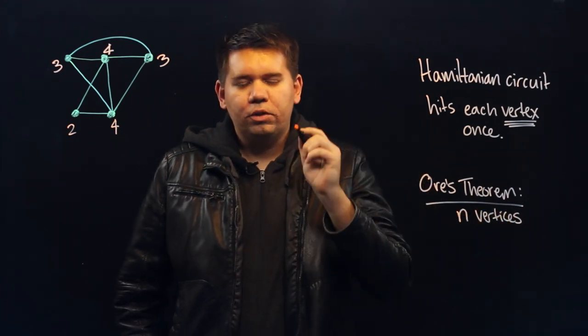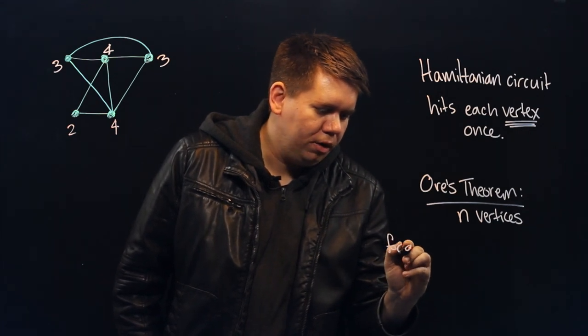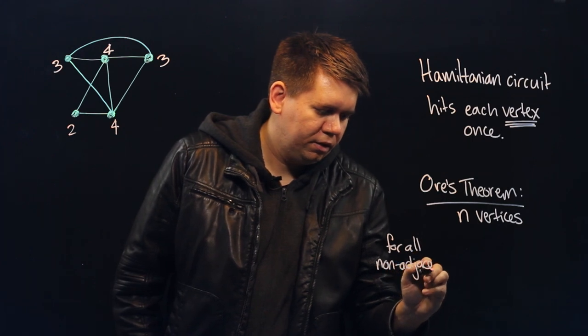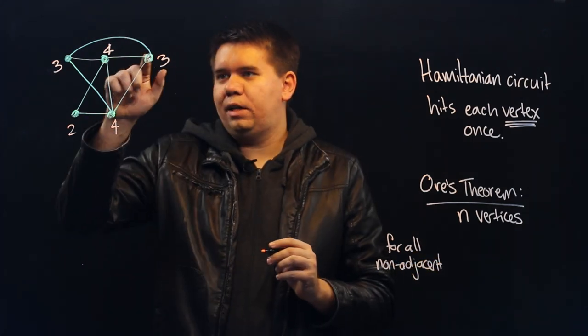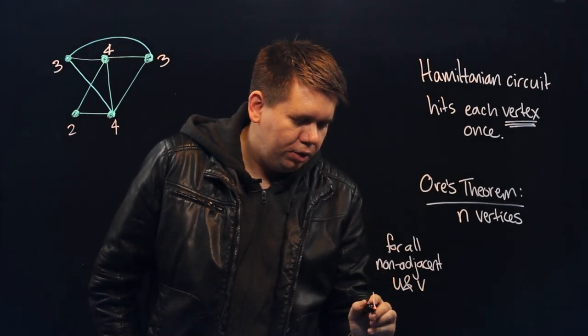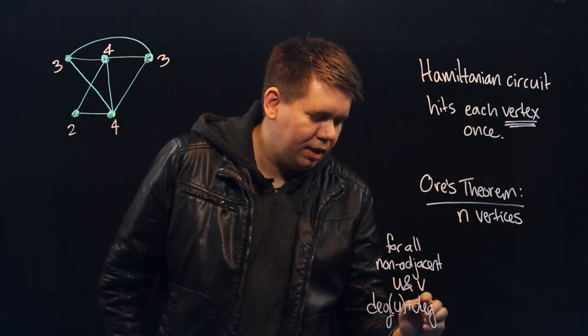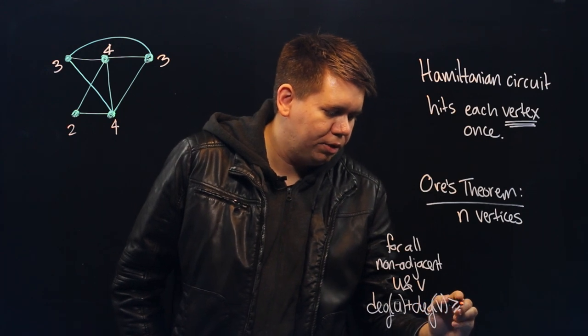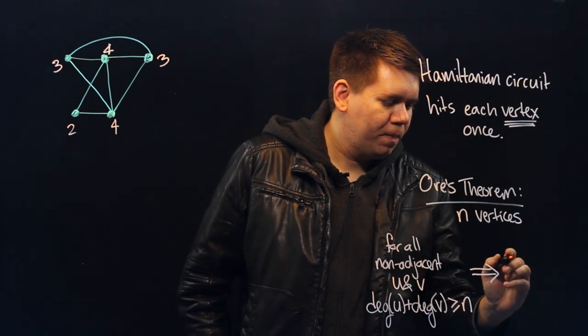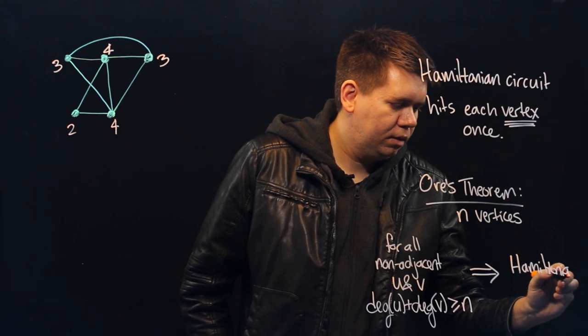Then, if it's always the case for non-adjacent vertices—that is, vertices that do not share an edge between them—if for all non-adjacent U and V, you have that the degree of U plus the degree of V is greater than or equal to n, that will guarantee the existence of a Hamiltonian circuit.